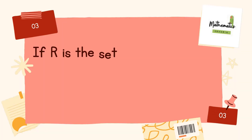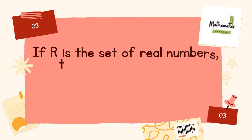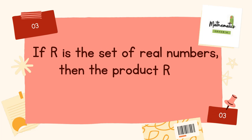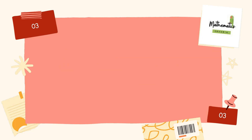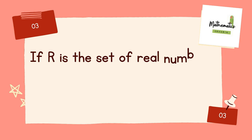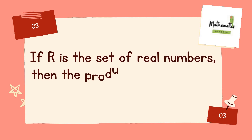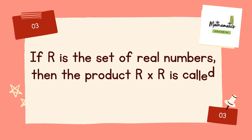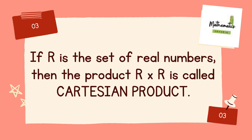Number 3. If r is the set of real numbers, then the product r cross r is called? Answer: if r is the set of real numbers, then the product r cross r is called the Cartesian product.